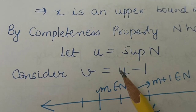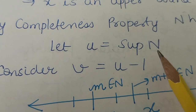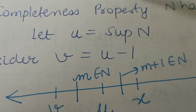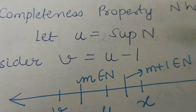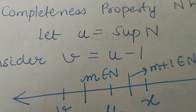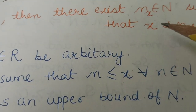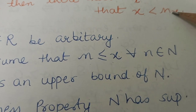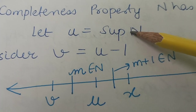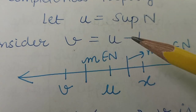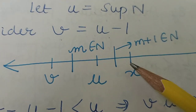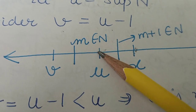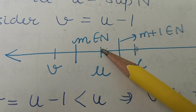Now we consider v = u − 1. Here u has become the supremum — that is, the least upper bound — of the natural numbers. Our target is to show that x is less than some n. Since u is the supremum and v = u − 1, and x was the upper bound while u is the least upper bound of the natural numbers...